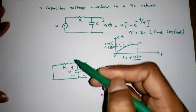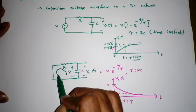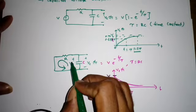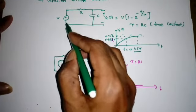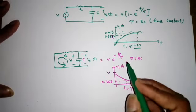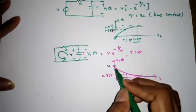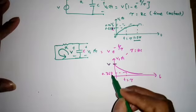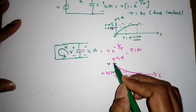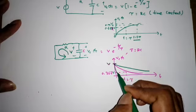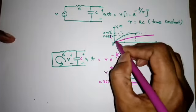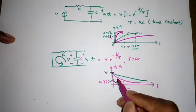At t equals 5 tau, the capacitor charges to approximately 99% of the final value, so we generally take 5 tau as the time to reach the final value. When the voltage is made zero, the capacitor acts as a source and discharges through the resistor exponentially to zero, following V into e to the power of minus t over tau. If the time constant is very small it discharges quickly; if very large it discharges slowly. At t equals tau, discharge reaches 36.7% of the initial value.